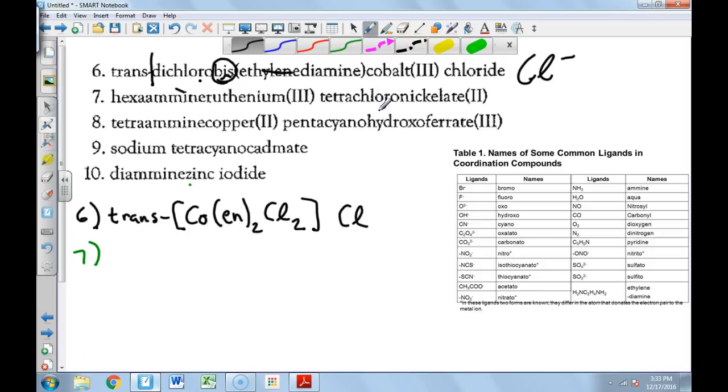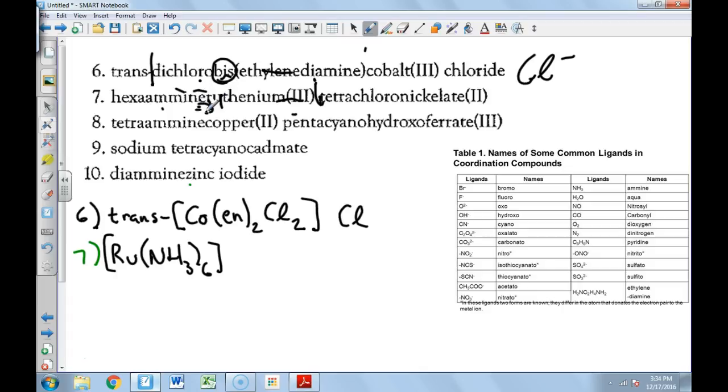Let's do number seven. Hexaamine ruthenium-3-tetrachloronicolate-3. Super weird, but we're going to split it in half. I'm going to read it backwards and write it forward. So ruthenium-3, that's Ru, and this has got to be in square brackets. Ruthenium-3, and then hexamine NH3-6. What's the charge on this? The charge on this side is three plus because the only thing that has a charge is the ruthenium. The amine has a zero charge.